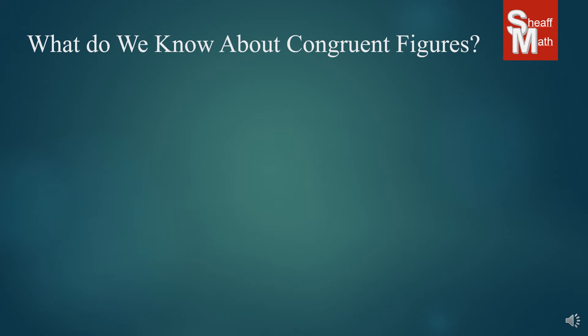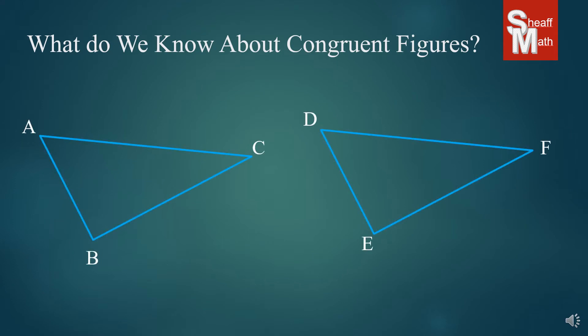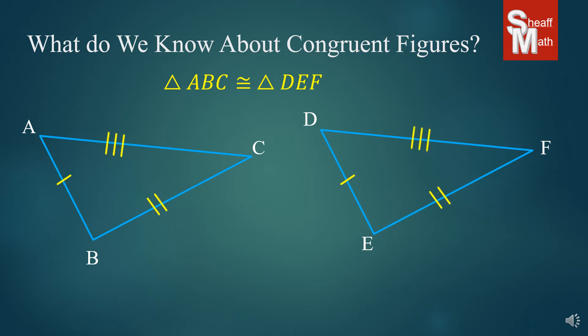So what do we know about congruent figures? Well, we have these two triangles right here and they appear to be congruent, they appear to be the same, but we can never trust our eyes. They could be just a tiny bit longer on one edge, and so in order for us to know for sure that they're congruent, first off we have to have congruent corresponding sides. The sides that match each other have to be the same length, and we put tick marks there to tell us.